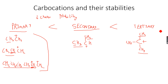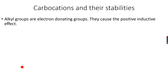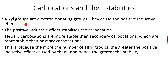The process by which these alkyl groups move their electrons towards the carbocation is called the positive inductive effect. All of these alkyl groups are electron-donating groups — they cause the positive inductive effect, basically trying to lower the positive charge on the carbocation.